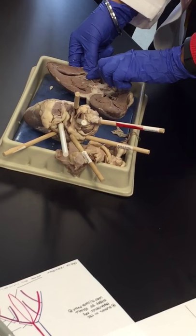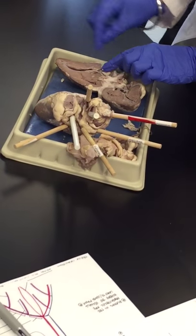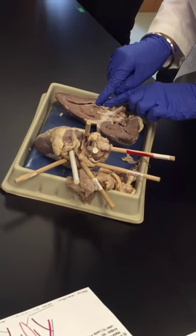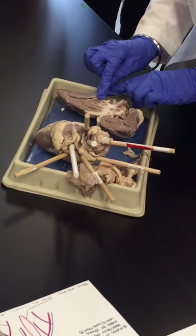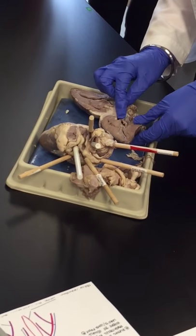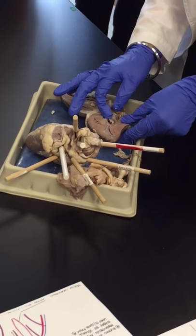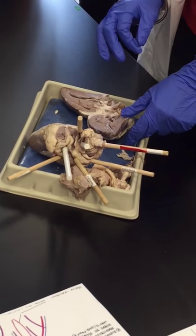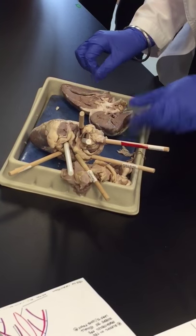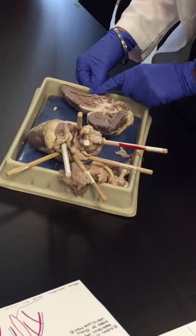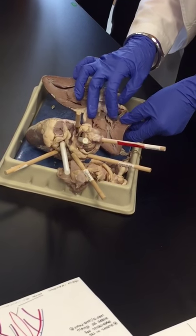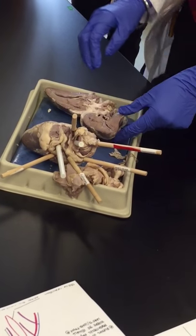The strings are the chordae tendineae, these are the valves. Similarly, the left one has the bicuspid or mitral valve. It's called tricuspid because it has one, two, and the third one out here. This is bicuspid because it only has two valves.